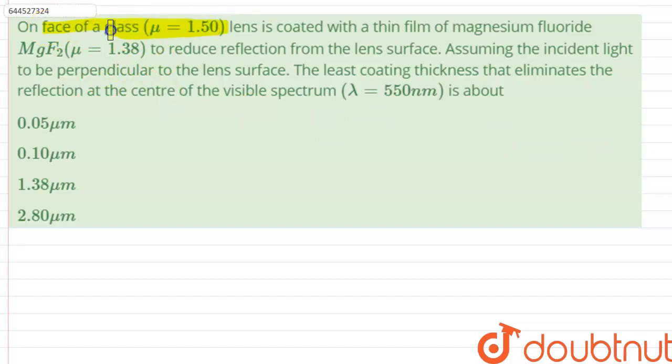On the face of a glass (μ = 1.50) lens is coated with a thin film of magnesium fluoride MgF₂ (μ = 1.38) to reduce the reflection from the lens surface. Assuming the incident light to be perpendicular to the lens surface, the least coating thickness that eliminates the reflection at the center of the visible spectrum where λ = 550 nm is about: